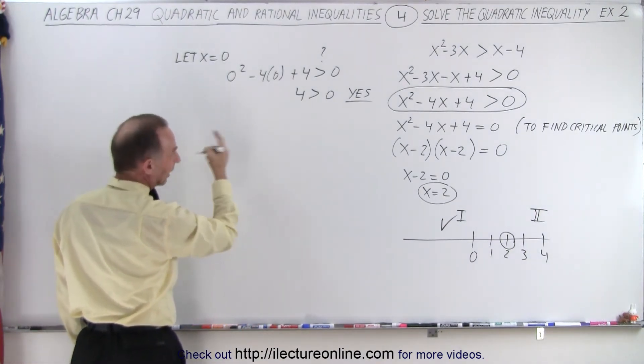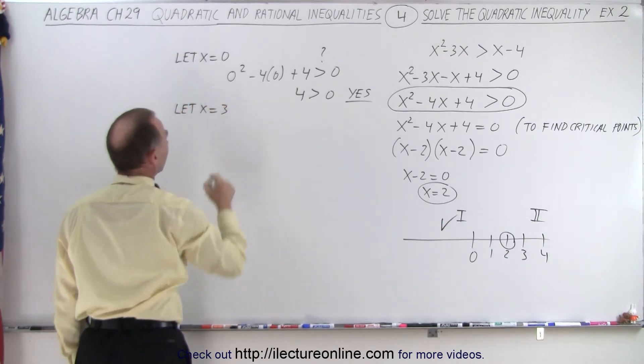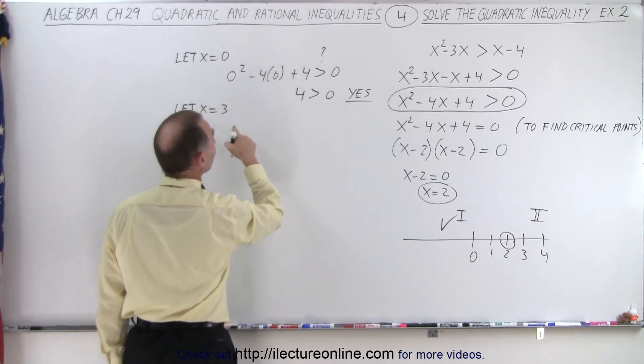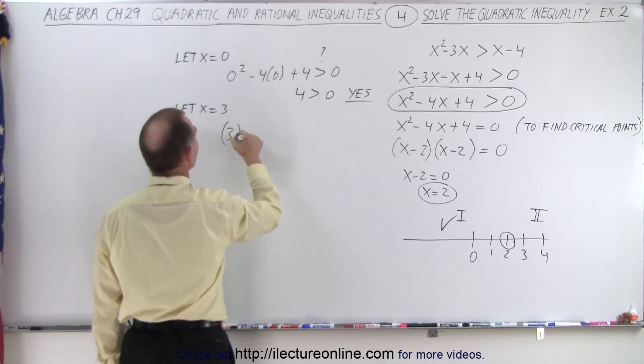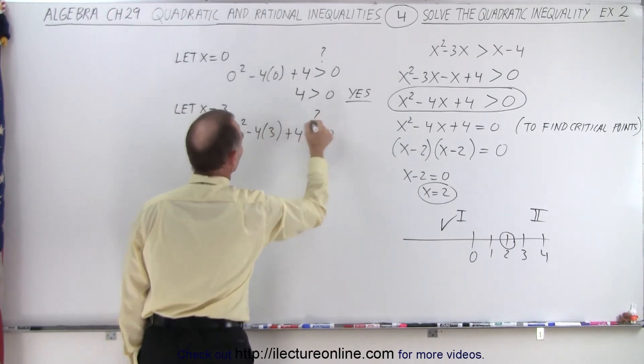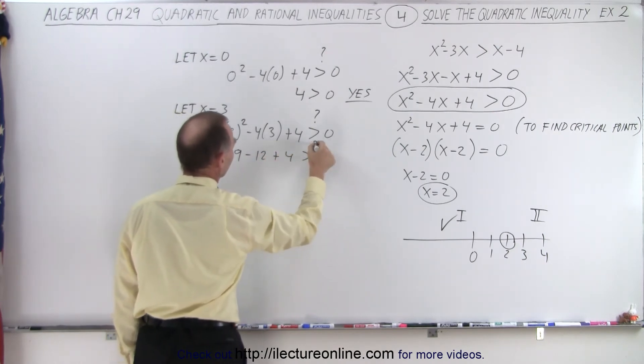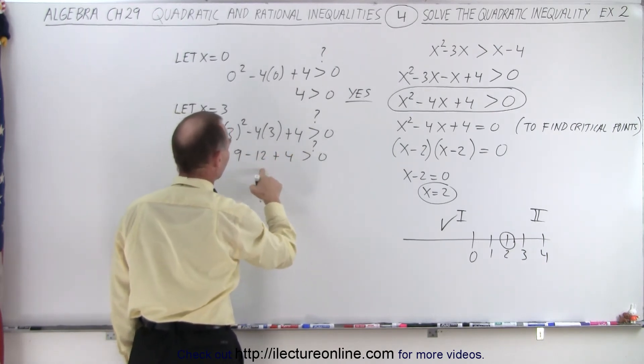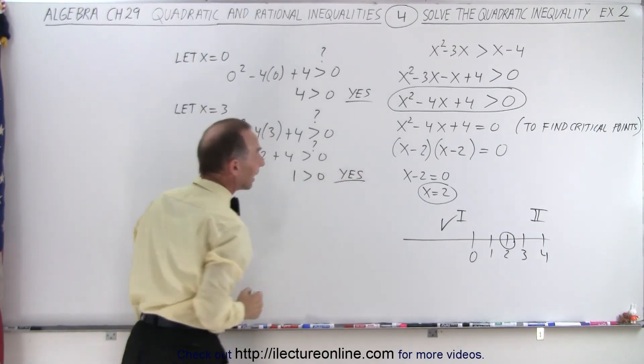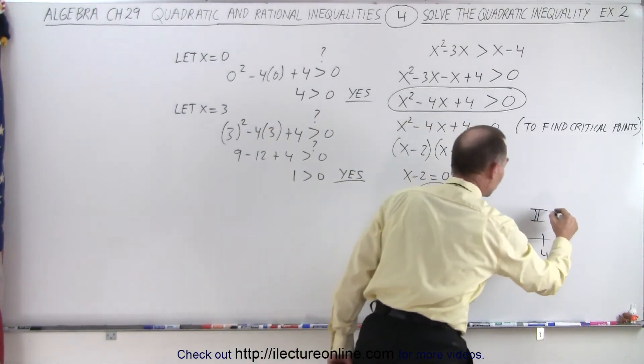How about picking let x equals 3? Let x equals 3, and that will test the region on the right of that number 2. So here we have 3 squared minus 4 times 3 plus 4. Is that greater than 0? So we have 9 minus 12 plus 4. Is that greater than 0? Notice that's 13 minus 12, 1 greater than 0. The answer is yes. So again, we picked a point in the region that satisfies inequality, so region number 2 also does.